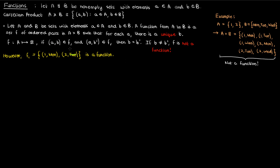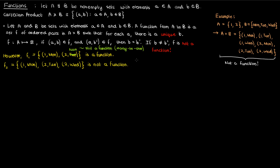I could even replace Tuesday with Monday, and f1 would still be a function because each element in a is being mapped to a single element in b, not multiple elements in b. It's a special type of function called a many-to-one function because both 1 and 2 are mapping to Monday, but it's a function nonetheless. However, if I had a subset f2 of a cross b where 2 is being mapped to multiple elements in b — in this case Tuesday and Wednesday — that would not be a function. The element 2 in a is not being mapped to a unique element in b, which disqualifies f2 from being a function.